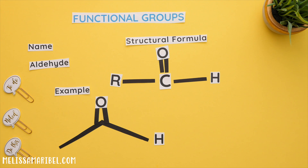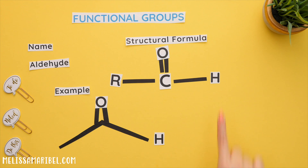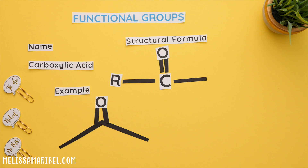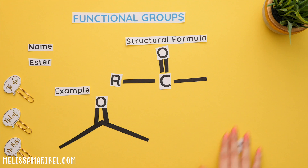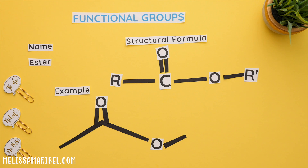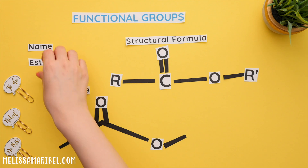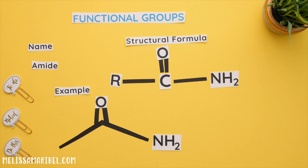A trick to remember this is that aldehyde has an H in it. A carboxylic acid still has the same carbon double bonded to oxygen, but now there is an OH instead of an R group or hydrogen. An ester has a similar structure — it just has an R group attached to the oxygen instead of a hydrogen.